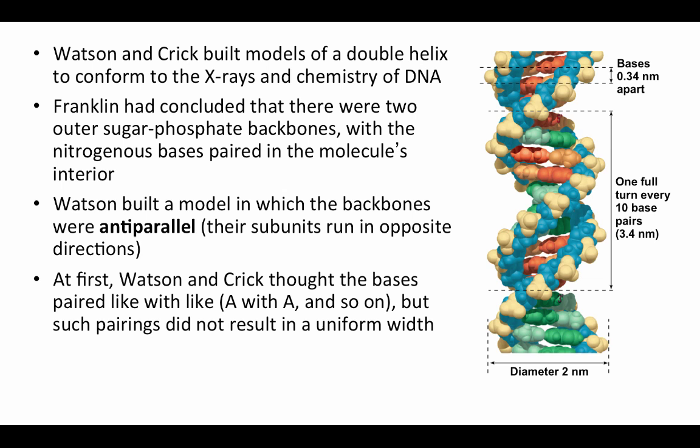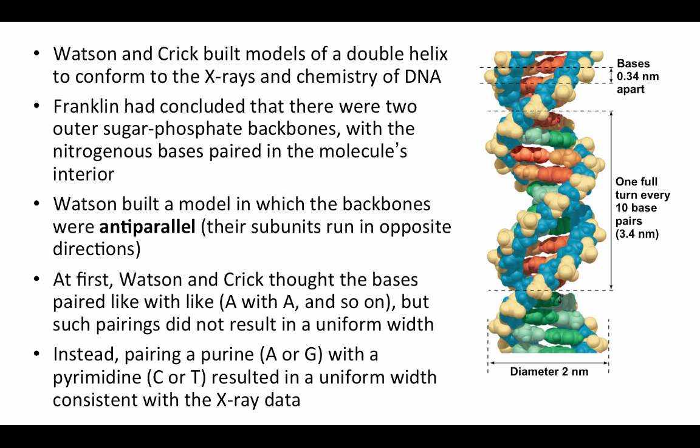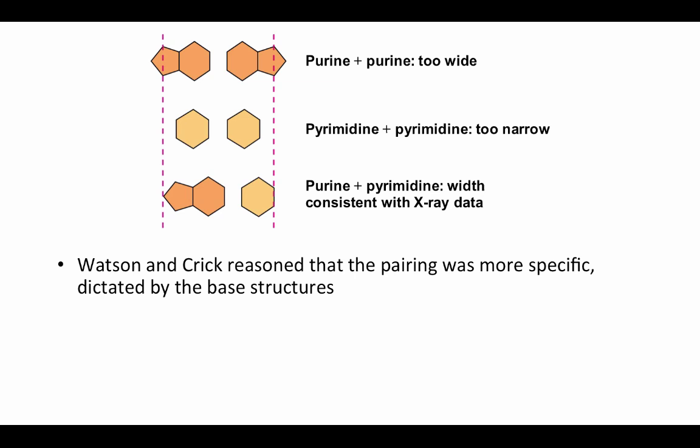Watson and Crick built models of a double helix using both Franklin's imaging data and their knowledge of DNA chemistry, including hydrogen bonding and how molecular components must connect. Franklin had concluded there were two outer sugar-phosphate backbones forming the helix, with the nitrogenous bases facing inward — contrary to earlier models that placed the bases on the outside. Watson made the model work by making the backbones anti-parallel, running in opposite directions — the only arrangement consistent with both the images and the known chemistry.